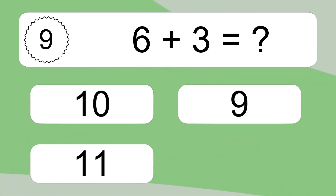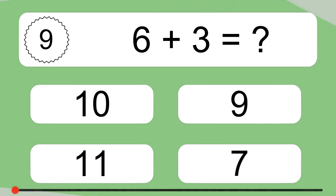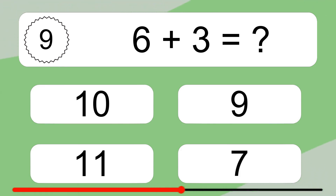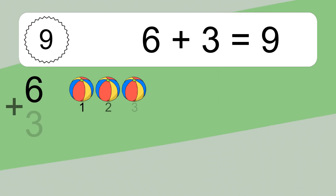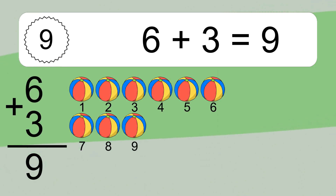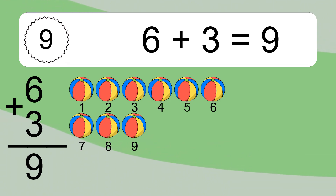6 plus 3 equals what? 6 plus 3 equals 9. Let's count it: 1, 2, 3, 4, 5, 6, 7, 8, 9.